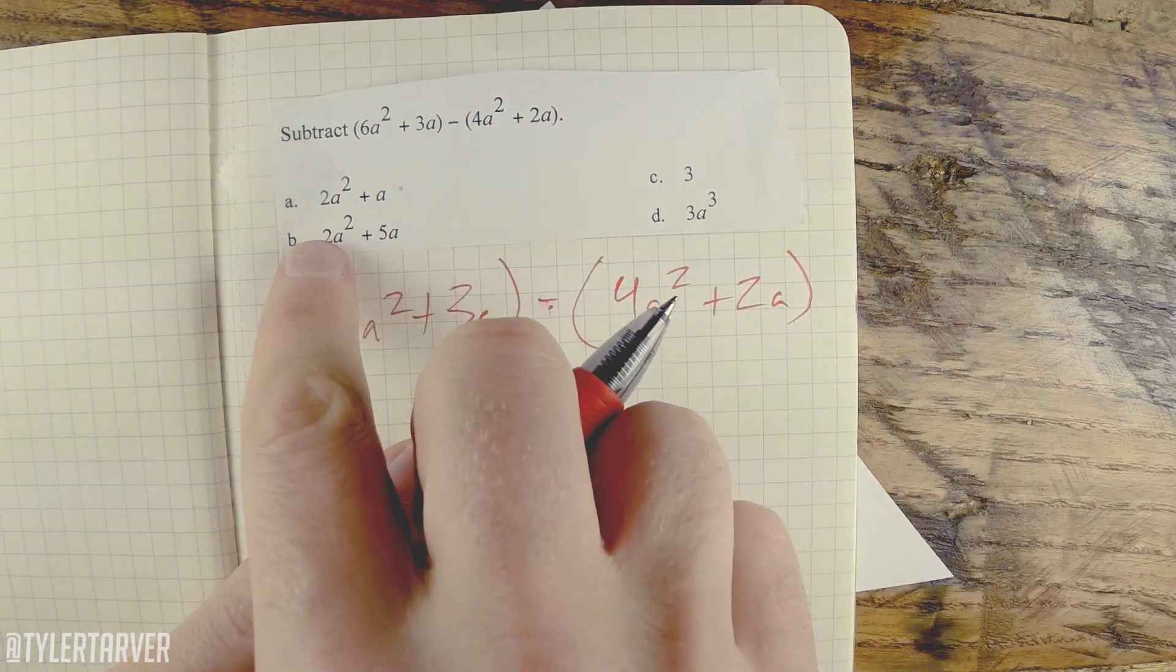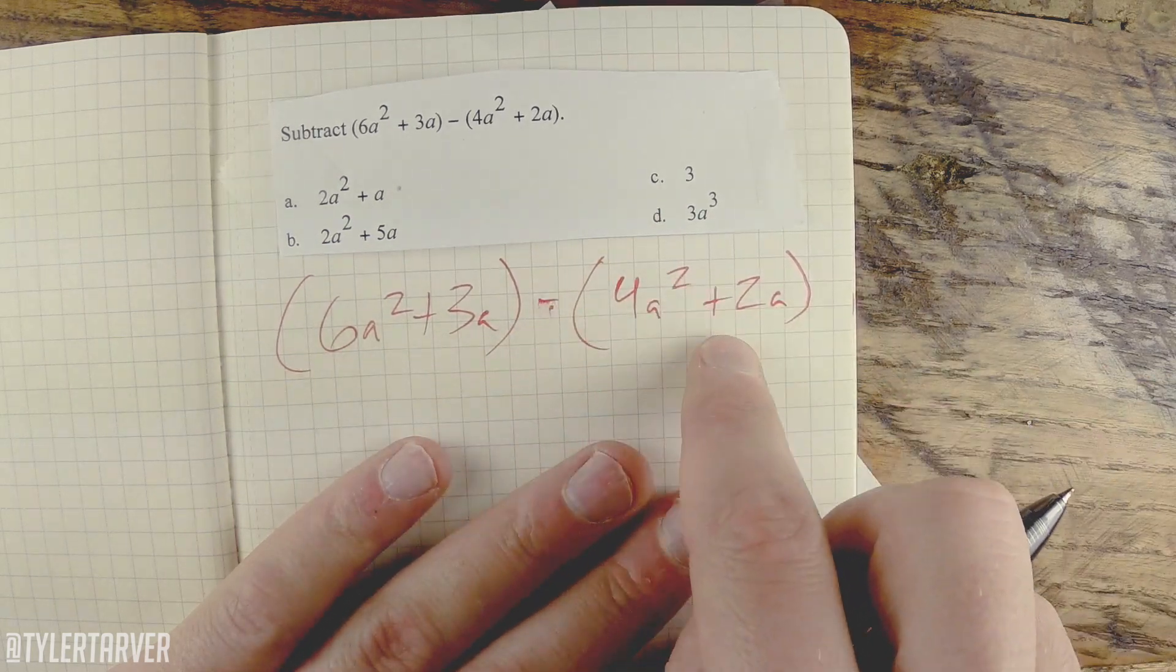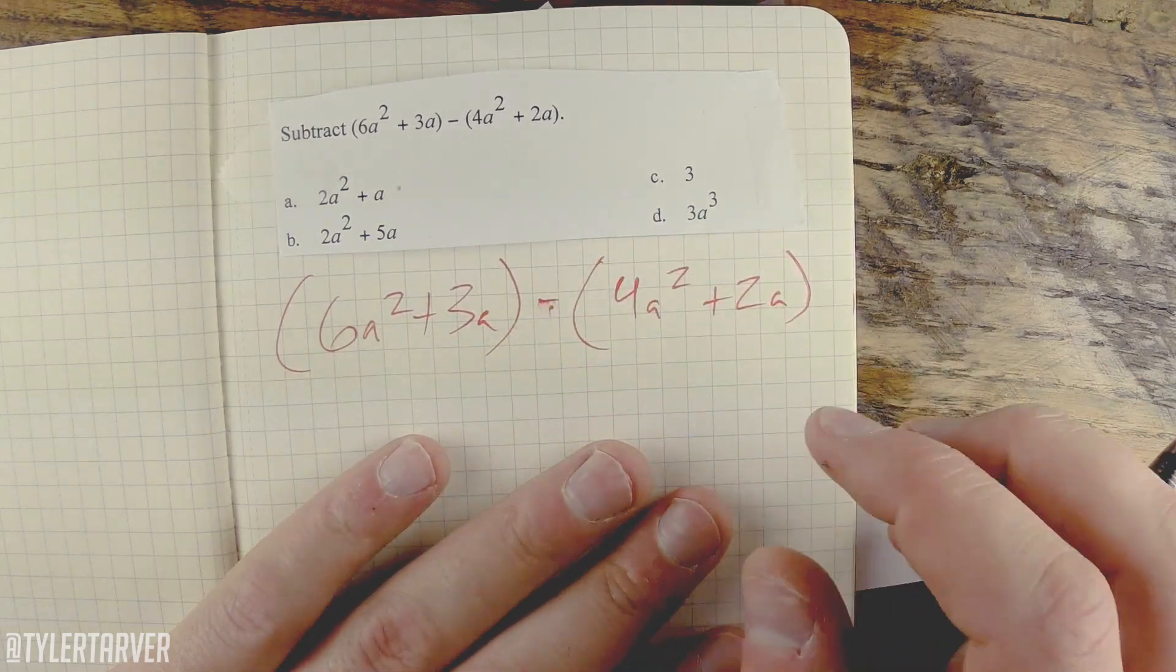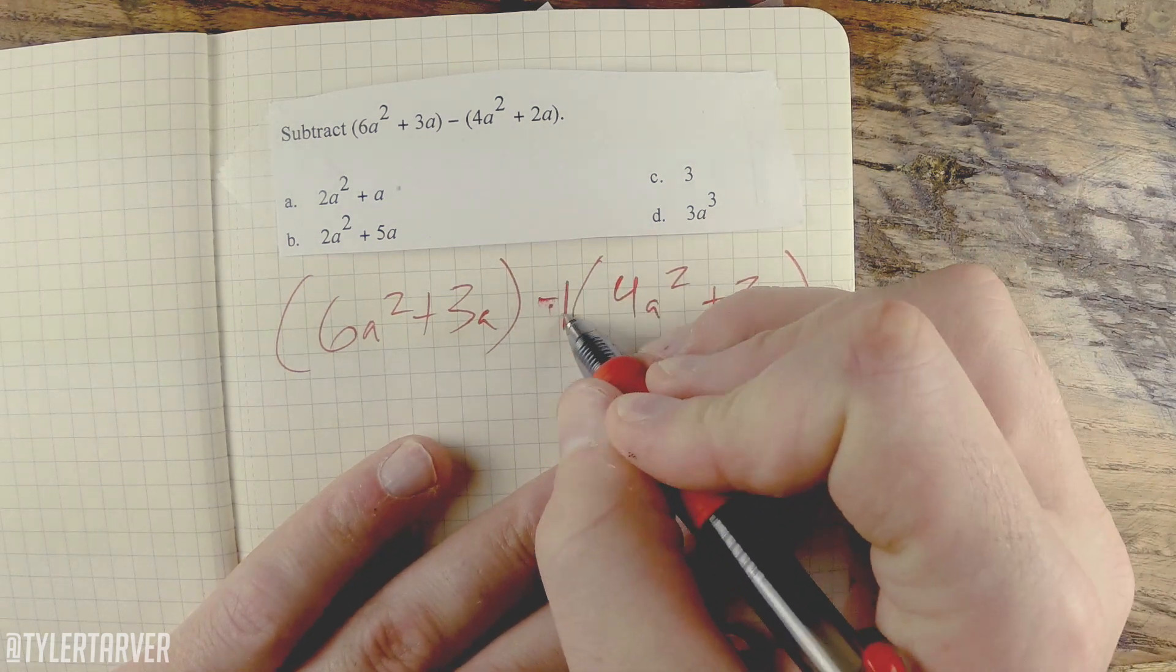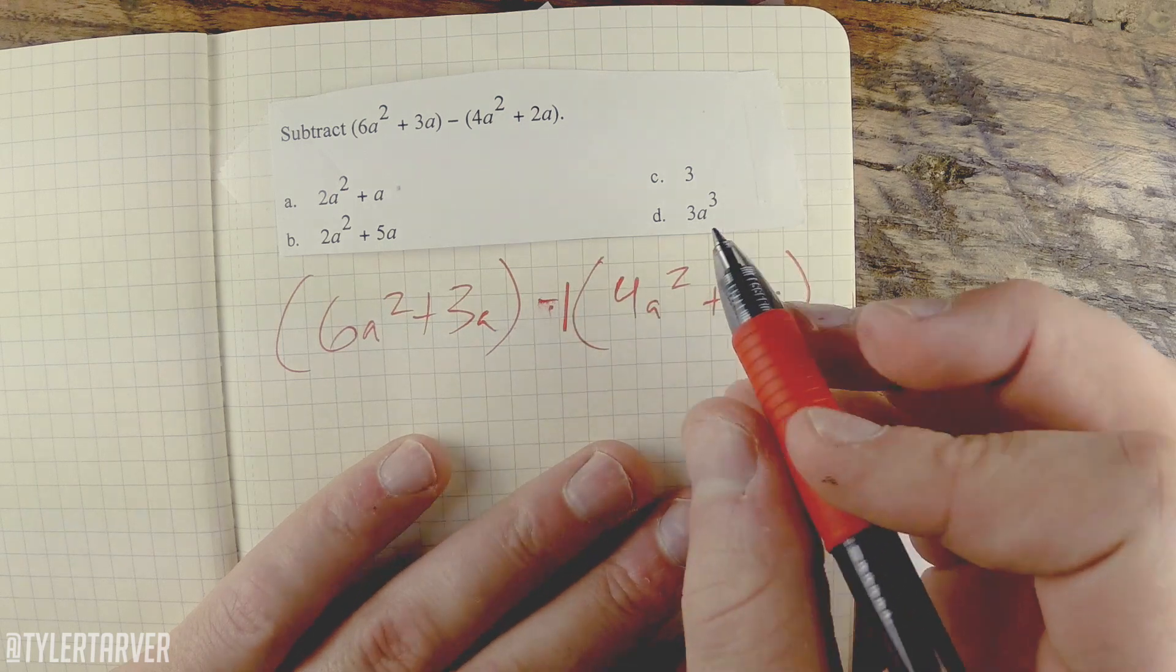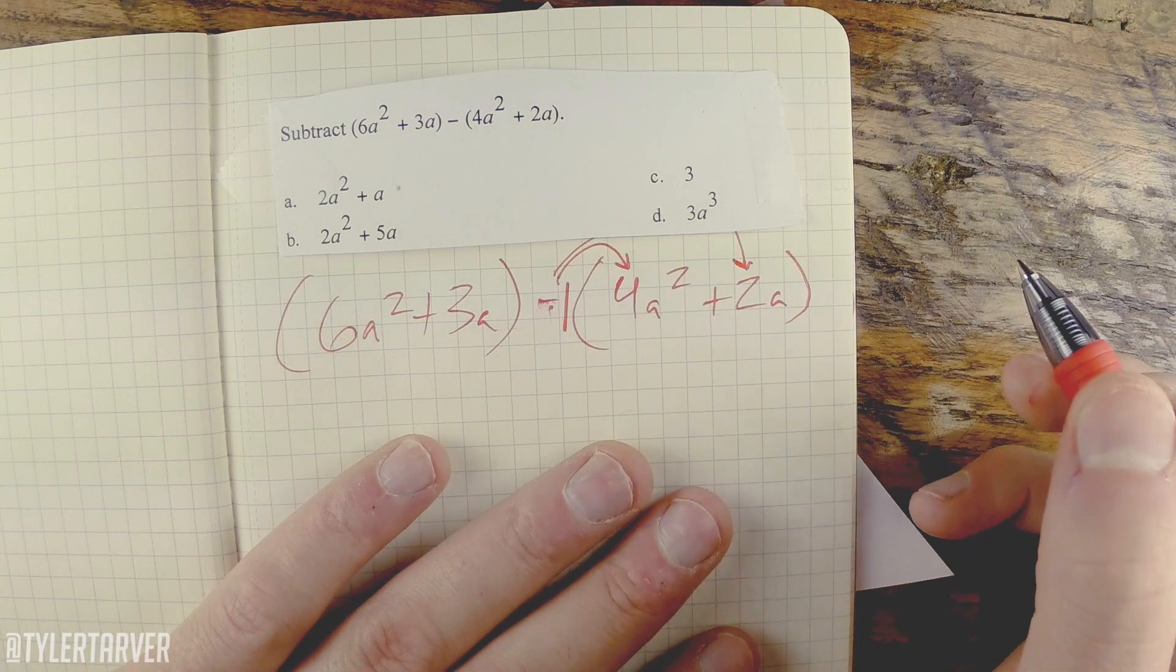A lot of people when they're working this, they'll just drop all the parentheses and work the problem like negative 4a² plus 2a. Here's the deal: when that negative is outside the parentheses, that's like a negative 1 times that whole thing.